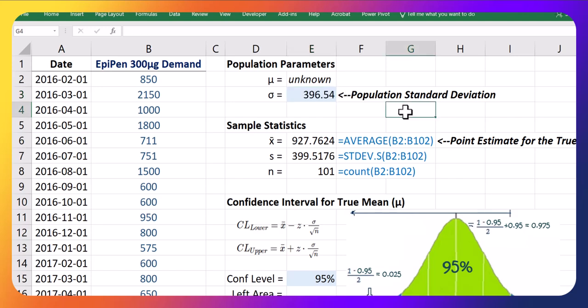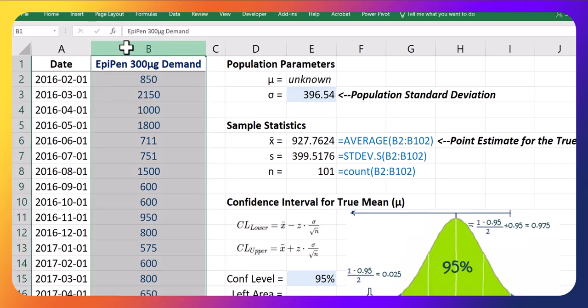But yeah, let's assume we happen to know the population standard deviation is 396.5 and then we have now collected a sample of demands.